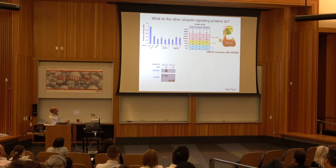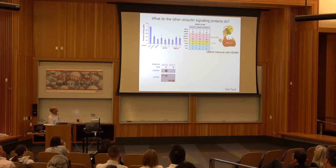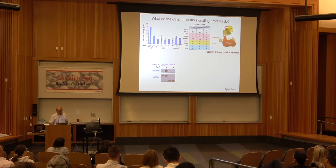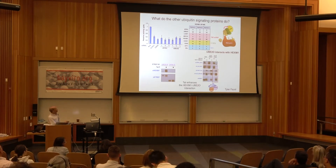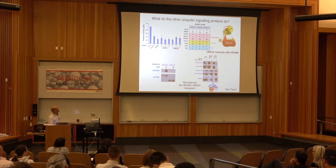TAT markedly enhances the interaction of HEXIM1 with UBE2O. The idea is that TAT binds to UBE2O and recruits it to HEXIM1 to do its job. Looking at the residues important for binding of UBE2O to TAT, we found a little cluster of residues important for this interaction, distinct from the region that interacts with P-TEFb components or AFF1, a component of the super elongation complex. So there is a novel interface on TAT involved in interacting with the UBE2O ligase.